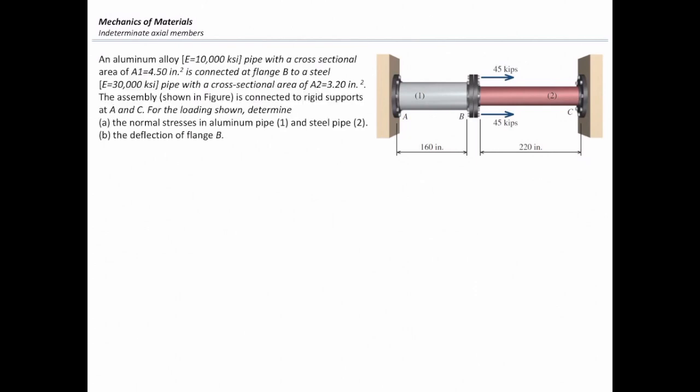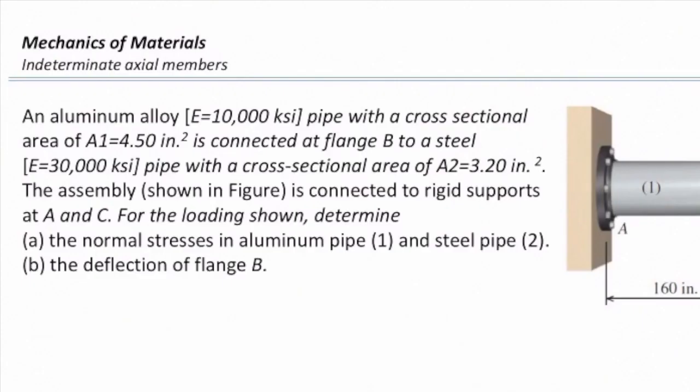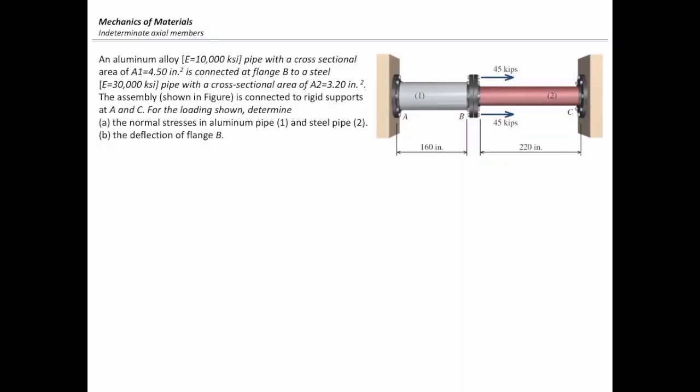Let me talk about one example numerically. An aluminum alloy with a modulus of elasticity of 10,000 KSI and a cross-sectional area of 4.5 square inches is connected at flange B to a steel pipe. Steel has a modulus of elasticity of 30,000 KSI with a cross-sectional area of 3.2 square inches. This assembly is connected to rigid supports at A and C. For the given loading, determine: A, the normal stress in the aluminum and steel pipes; and B, the deflection of flange B.